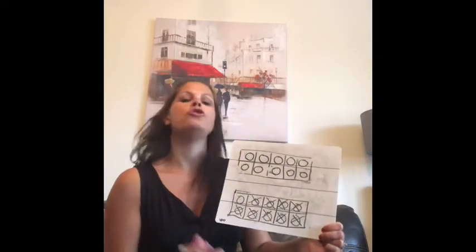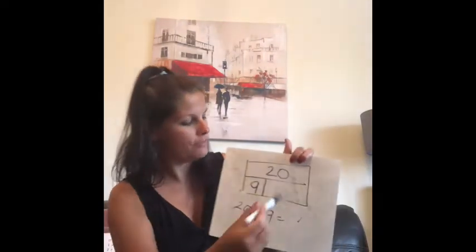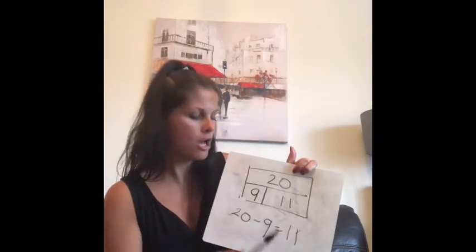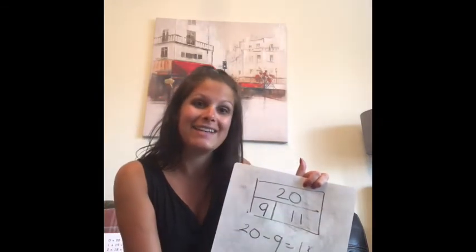This time I'm not going to count all the circles, because I know this is 10. So I'm going to count on from 10. 10, 11. So 11 is my answer. And of course it is. Because we know 9 and 11 make 20. Fabulous.